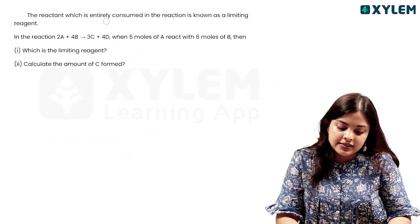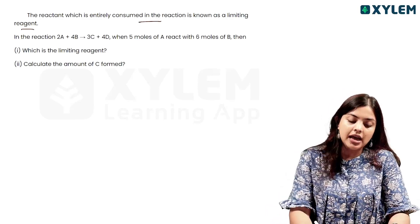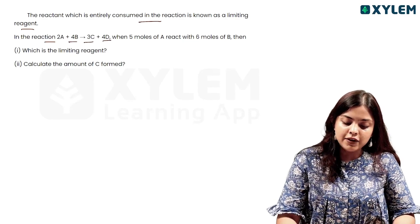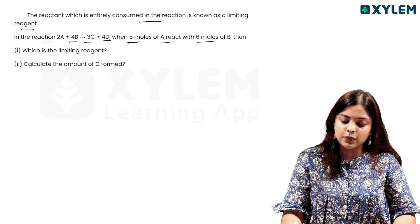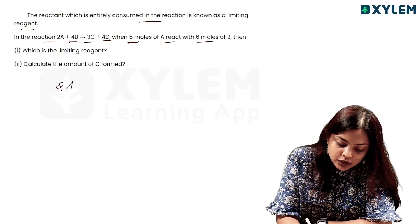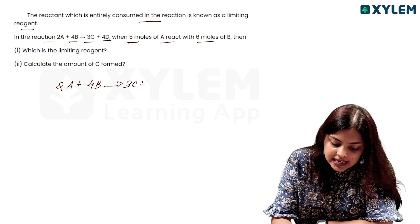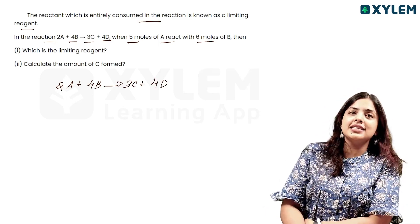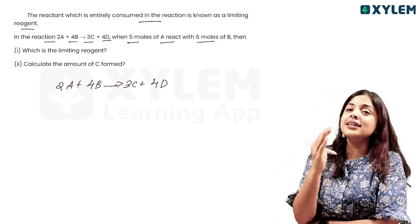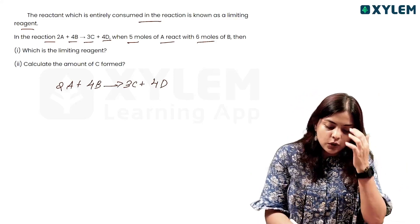The reactant which is entirely consumed in the reaction is known as the limiting reagent. In the reaction 2A + 4B → 3C + 4D, when 5 moles of A react with 6 moles of B, we have to analyze this equation to find the limiting reagent.